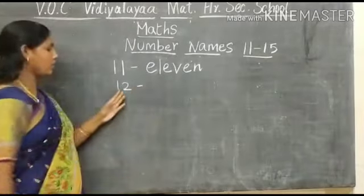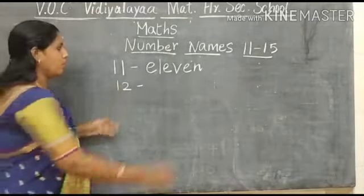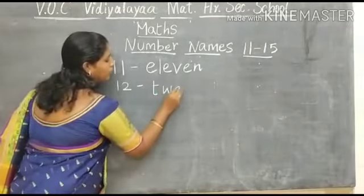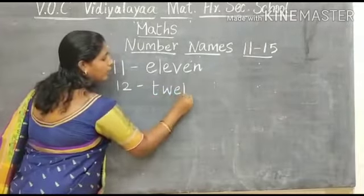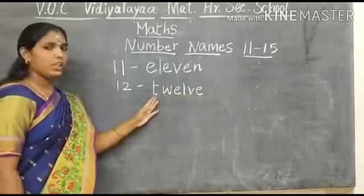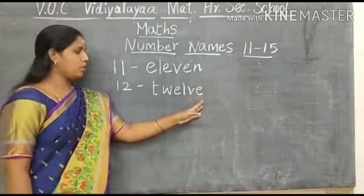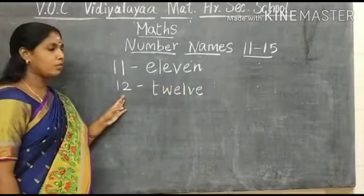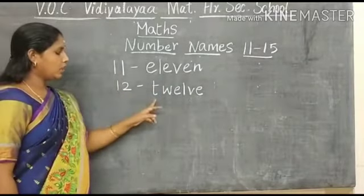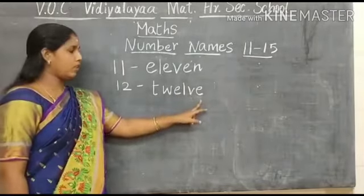What number is this? This is number 12. What is the spelling of number 12? T, W, E, L, V, E. 12. What is the spelling of number 12? What number is this? This is number 12. T, W, E, L, V, E. 12.